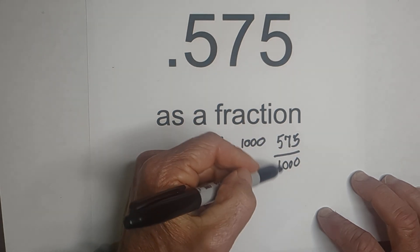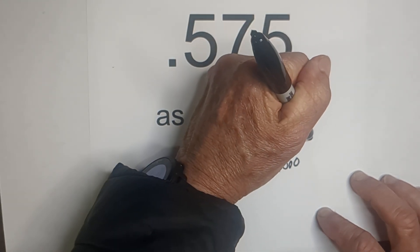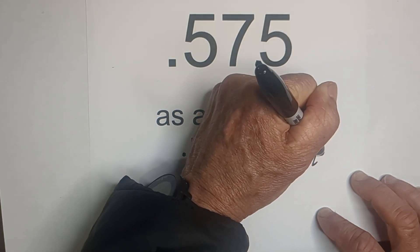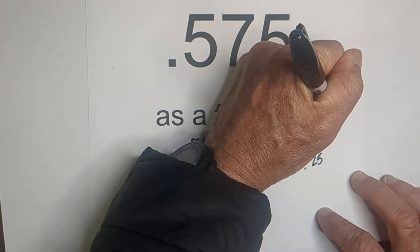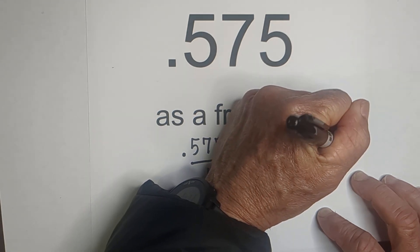I now need to reduce this fraction. Well I know both of these are divisible by 25. So I'm just going to start with 25. And so 575 divided by 25 is 23 and 1,000 divided by 25 is 40.